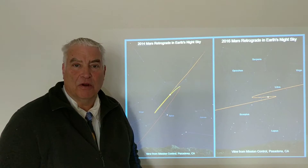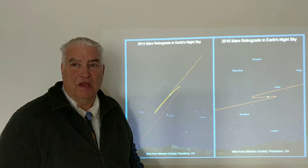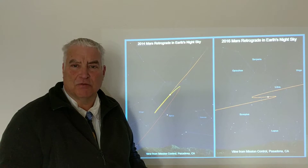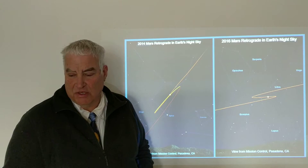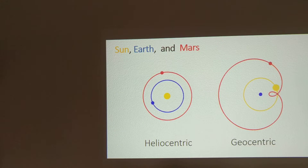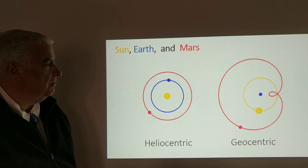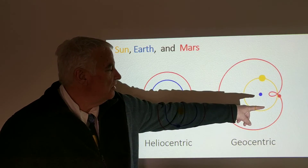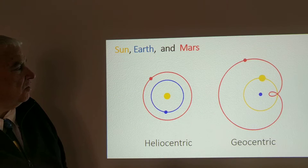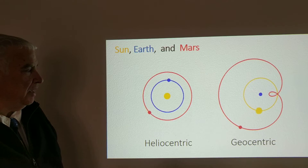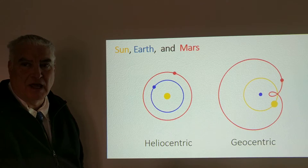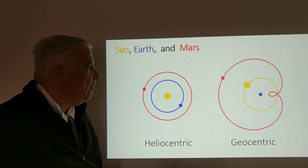In the geocentric model, retrograde motion is a kind of challenge, but in the heliocentric model it is a natural consequence of the motion. In the geocentric model we see the earth in blue, not moving, so the sun goes around the earth in a perfect circle and there's no need for the sun to undergo any strange motion like an epicycle.